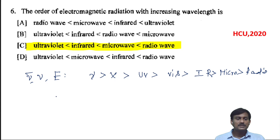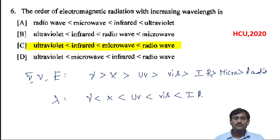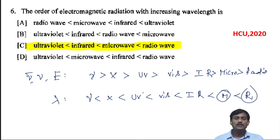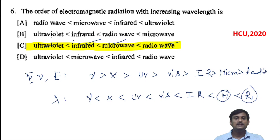There is an inverse relation between energy and wavelength (lambda). So the order of increasing wavelength will be: ultraviolet, infrared, microwave, radio. The highest wavelength is radio, next is micro, next is infrared, next is ultraviolet. So the incorrect option is C.